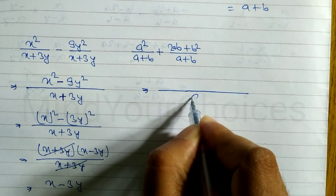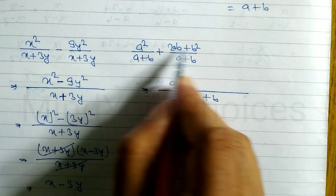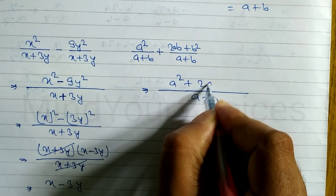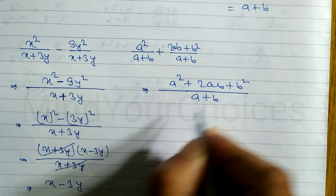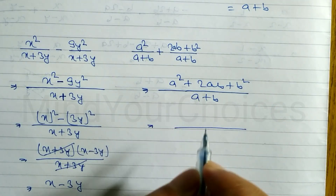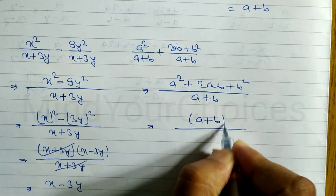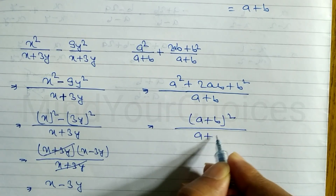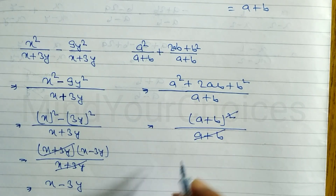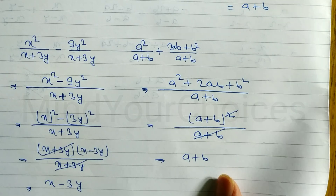In the next question, LCM is (a+b). Since denominators are the same, we write the numerator: a² + 2ab + b². This is in the form of the formula a²+2ab+b² = (a+b)². So we have (a+b)² divided by (a+b), the (a+b) cancels, and the remaining answer is (a+b).